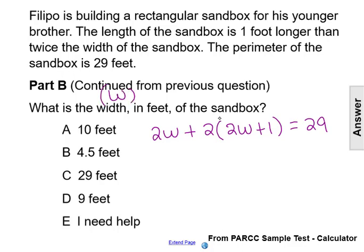To solve for w, first we're going to distribute the 2 to 2w plus 1. So that will simplify the left side of the equation to be 2w plus 4w plus 2 equals 29.